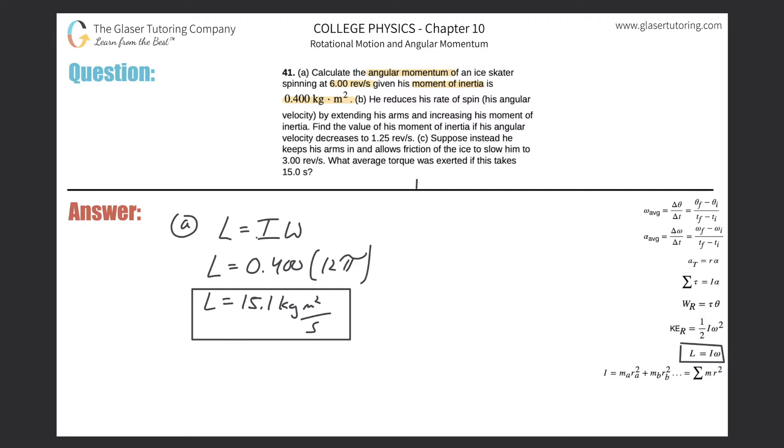Letter B. I wish all the problems were like this. Letter B. He reduces his rate of spin, his angular velocity by extending his arms and increasing his moment of inertia. Find the value of his moment of inertia if his angular velocity decreases to 1.25 revolutions per second.